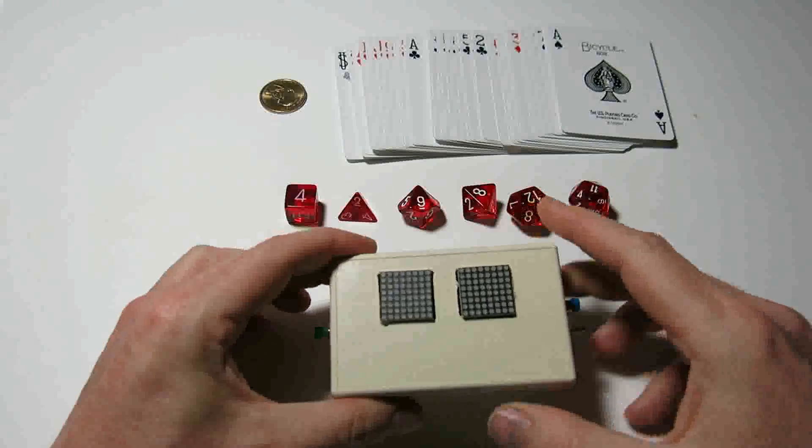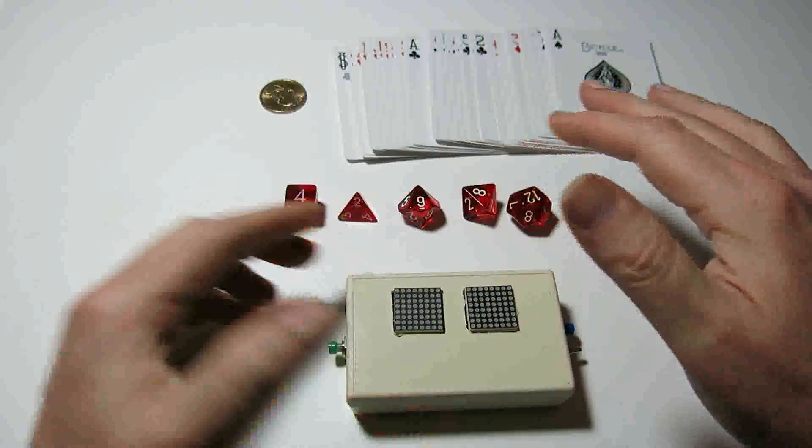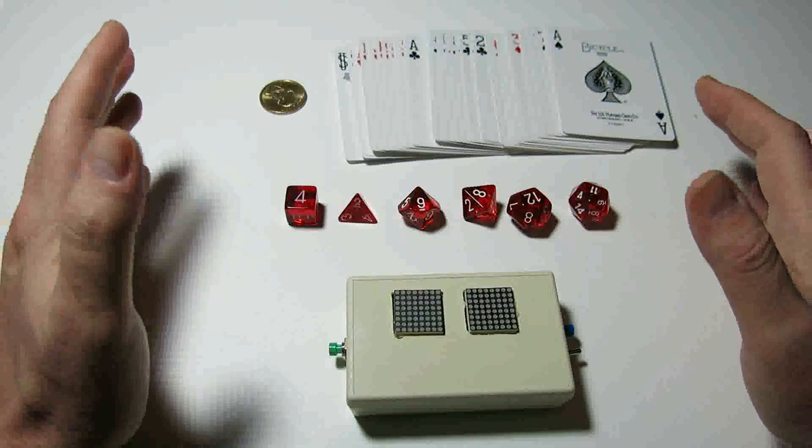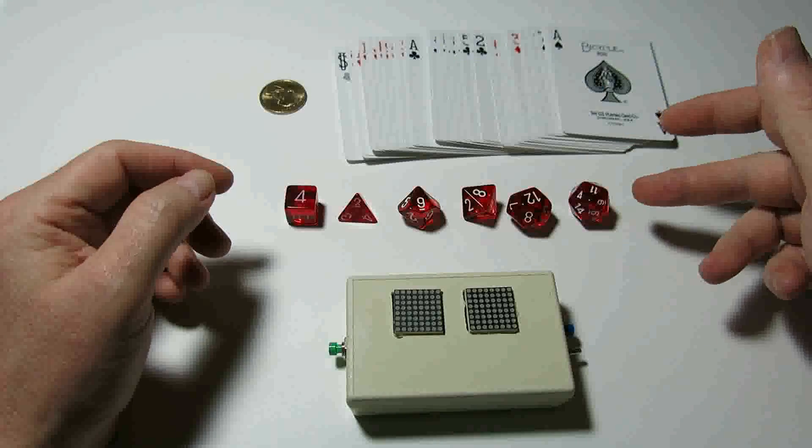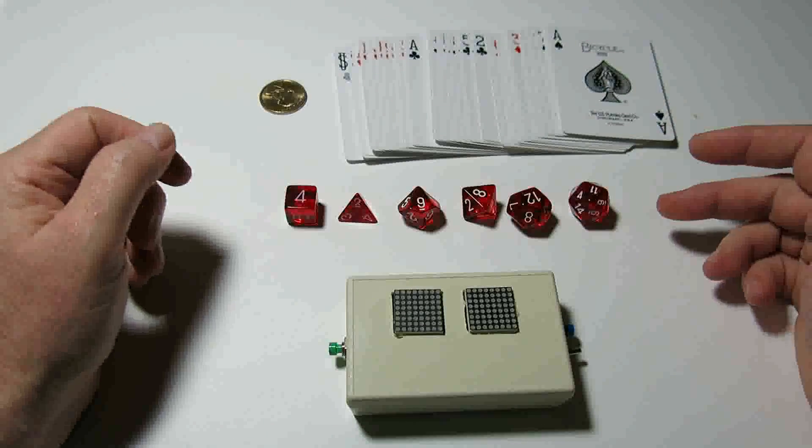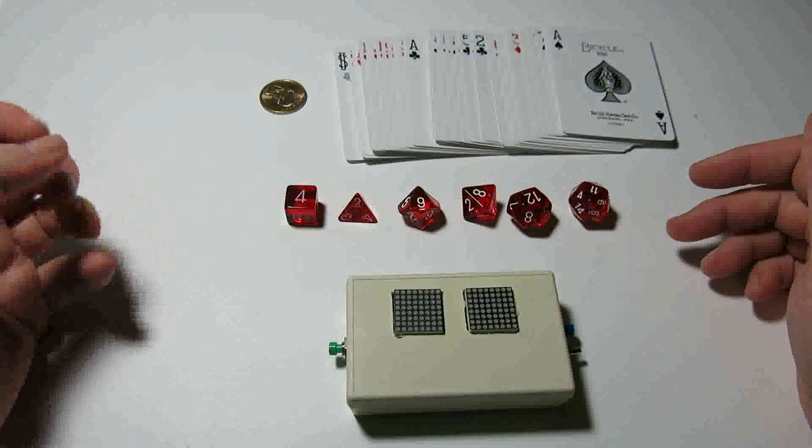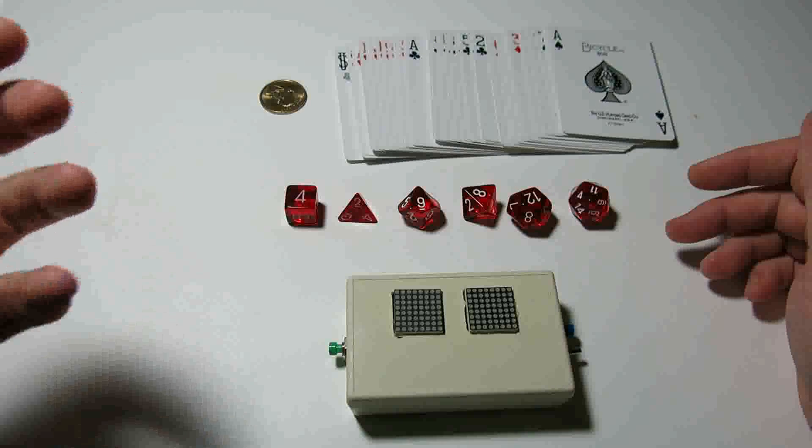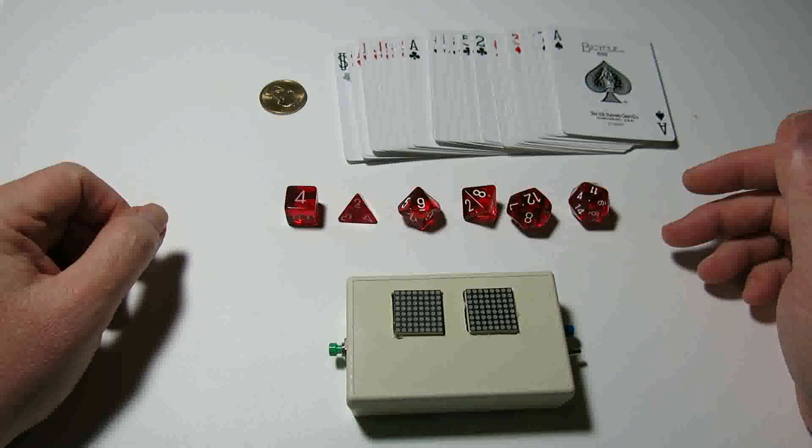This device manages to emulate all of these items that allow us to get random numbers. It emulates each one of these particular types of dice, a coin flip, and drawing a card. It also does a few other functions - it allows you to generate hexadecimal numbers, binary numbers, and passwords.